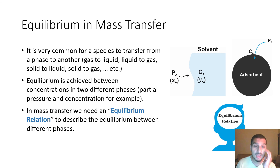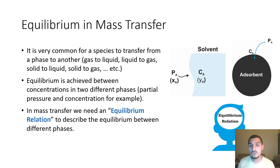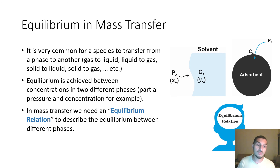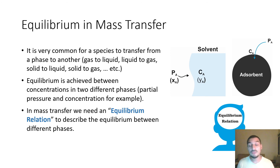The equilibrium relation defines at what concentration and pressure the two phases will reach equilibrium, where no more mass transfer will take place. This is an important thing to keep in mind, and it is what we deal with constantly in the videos on absorption, distillation, stripping, and other mass transfer operations — always working with both operating equations and equilibrium relations. This is a very important distinction from heat transfer and fluid mechanics, and I hope it is clear. We will continue in the next video.